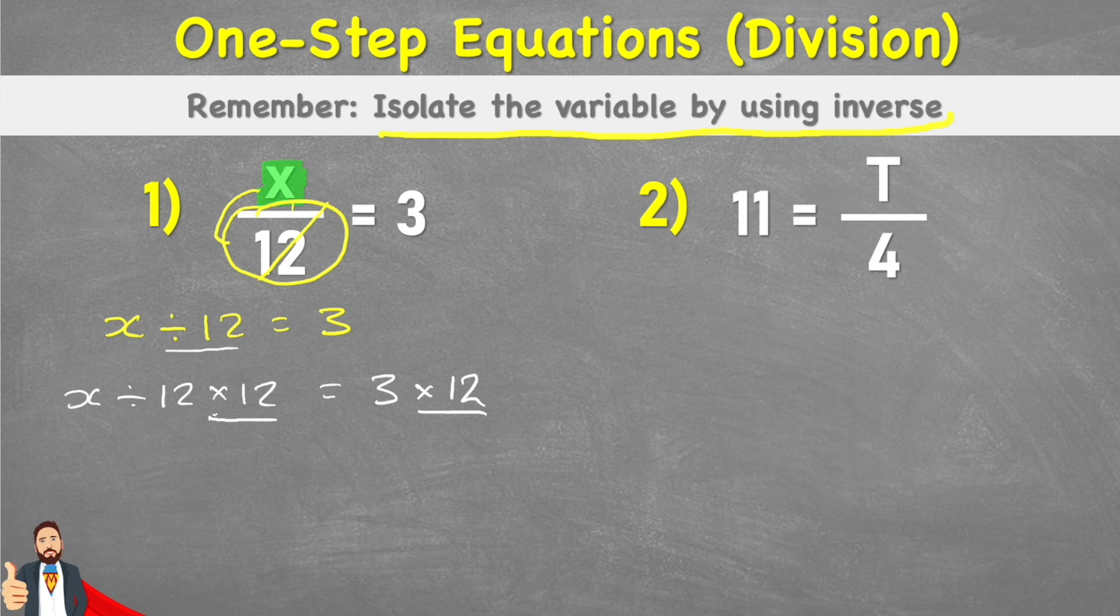So now on both sides of the equation, I've added this multiplied by 12. And what that does is it means that I can now get rid of this divide by 12 because divide by 12 times 12 effectively equals 0. So my next line would read x and then divide by 12 times 12 is 0. So I don't need to put anything there. So x equals 3 times 12, which is 36. And there we go. x equals 36.